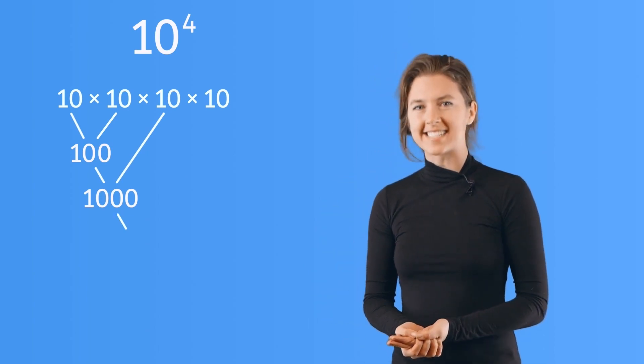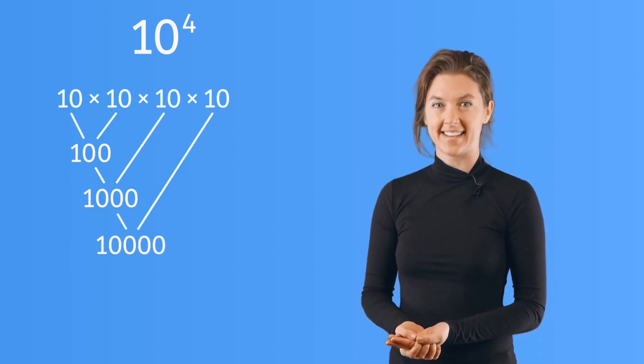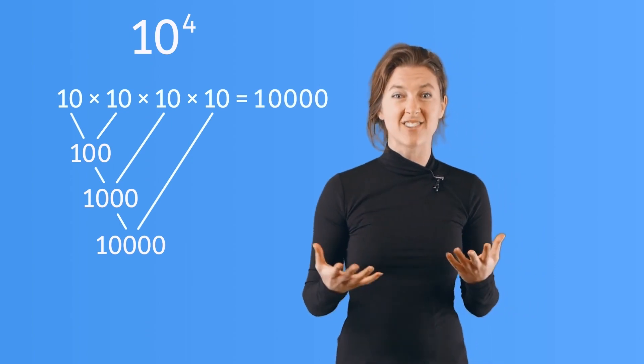Let's solve one final problem together. We read this as 10 to the power of 4. And you can ask yourself: what is 10 times 10 times 10 times 10? Well, 10 times 10 is 100, 100 times 10 is 1,000, and 1,000 times 10 is 10,000. So the answer is 10,000.